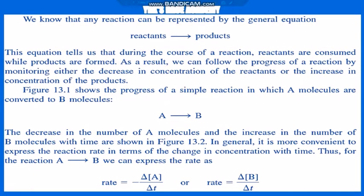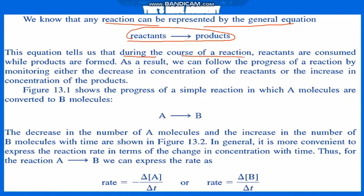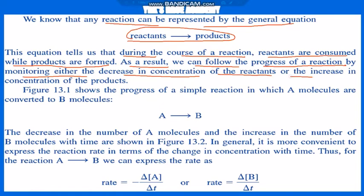Any reaction can be represented by the general equation: Reactants → Products. This equation tells us that during the course of a reaction, reactants are consumed while products are formed. As a result, we can follow the progress of a reaction by monitoring either the decrease in concentration of reactants or the increase in concentration of the products.